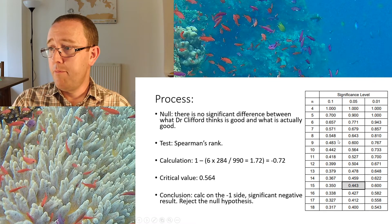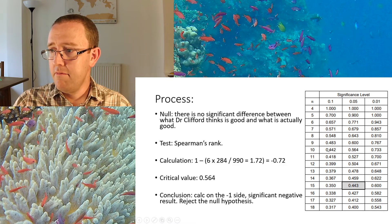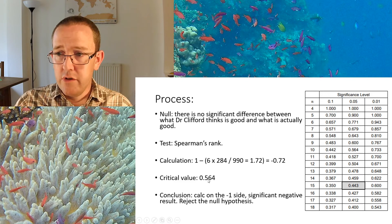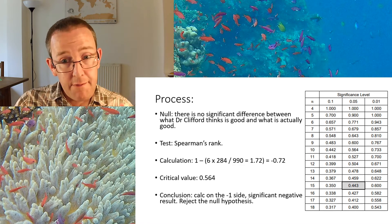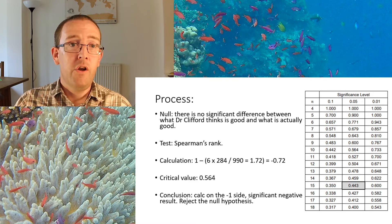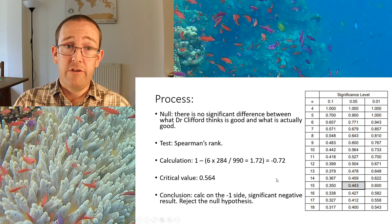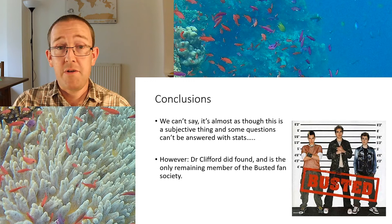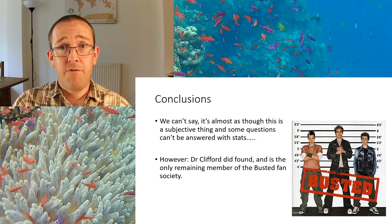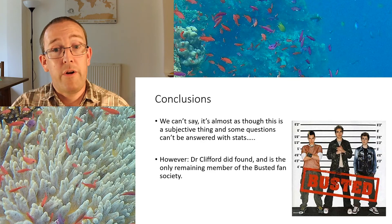The critical value at n = 10 and p = 0.05 is 0.564. Dr Clifford's result of minus 0.72 is closer to minus 1 than minus 0.564, so it's outside the critical value — that is a significant negative correlation. We reject the null hypothesis. There is a significant negative correlation between what is actually good and Dr Clifford's taste. However, who did the ranking initially? Where did that data come from? Nonsense in, nonsense out. Some questions simply can't be answered with stats — it's almost as though musical taste is subjective.